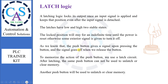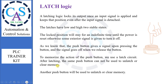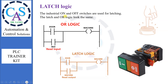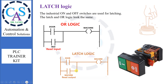As we know, the push button gives a signal upon pressing the button, and the signal goes off when we release the button. To memorize the action of the push button, we use a latch circuit. After latching, the same push button cannot be used to unlatch or clear memory. Another push button will be used to unlatch or clear memory. The industrial on and off switches are used for latching. The latch and OR logic look the same, but in OR logic, contact reads input values, and in latch logic, contact reads output values and memorizes it for an infinite time period.